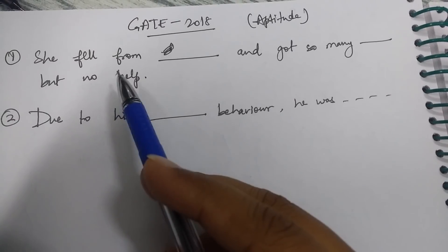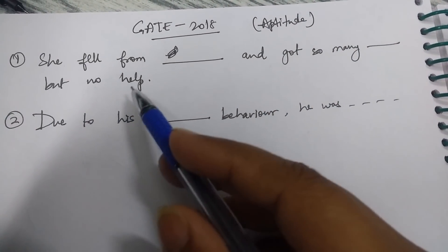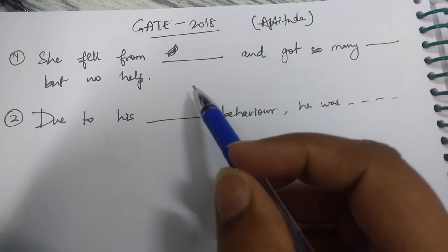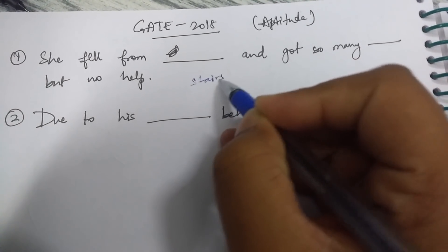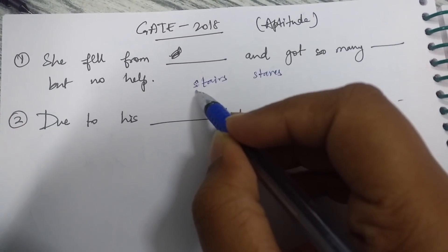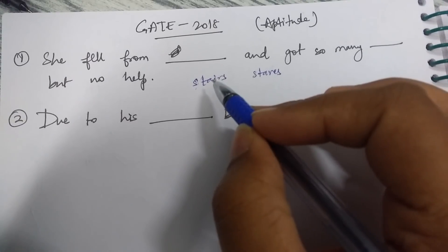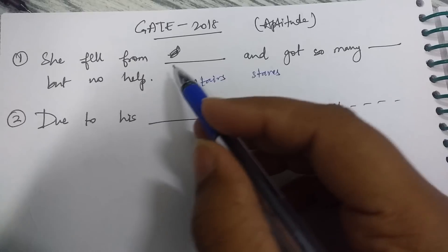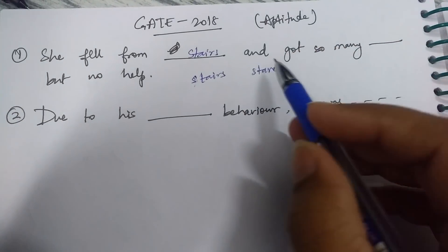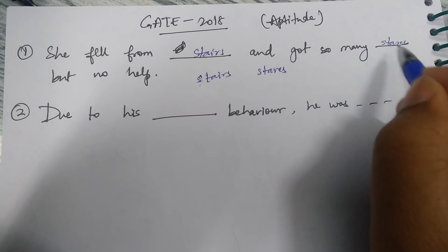These two questions came from the English part. The question was: 'She fell from dash and got many dash but no help.' They tried to confuse you between two words: 'stairs' (S-T-A-I-R-S) and 'stares' (S-T-A-R-E-S). She fell from 'stairs' — which means steps — and got many 'stares' — meaning many people started looking at her but nobody helped her.